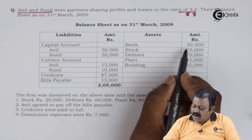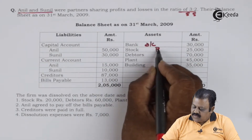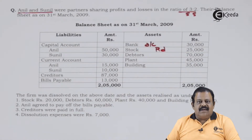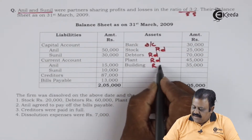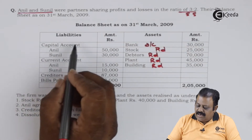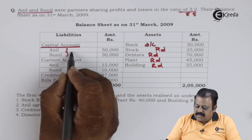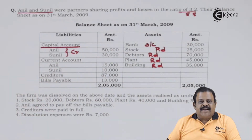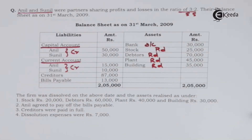Starting with the asset side: the bank account will be transferred to the bank account. Stock, debtors, plant, and building — these assets will be transferred to the realization account on the debit side at their book values. On the liability side, the partners' capital account balances will be transferred to the credit of the partners' capital account. Current accounts of Anil and Sunil will be opened and balances transferred to the credit of their current accounts.